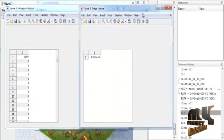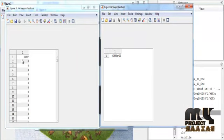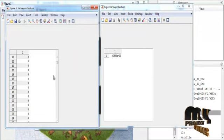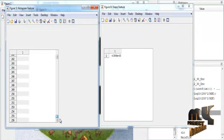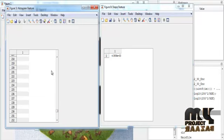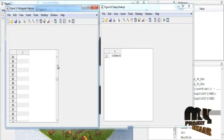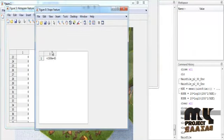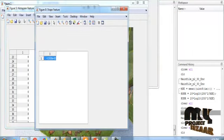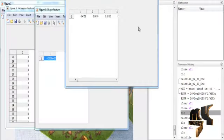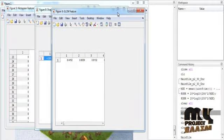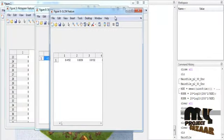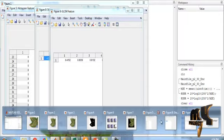So, for the feature extraction, first of all, table 1 shows the value of the histogram features. Then table 2 shows the value of the shape features. Table 3 shows the value of the GLCM feature.